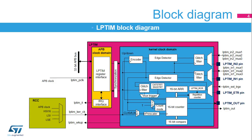The low-power timer is a peripheral with two clock domains. The APB clock domain contains the peripheral's APB interface. The kernel clock domain contains the low-power timer peripheral's core functions, and can be clocked by internal clock sources or by an external clock source through the timer's LP-TIM-IN1 input.